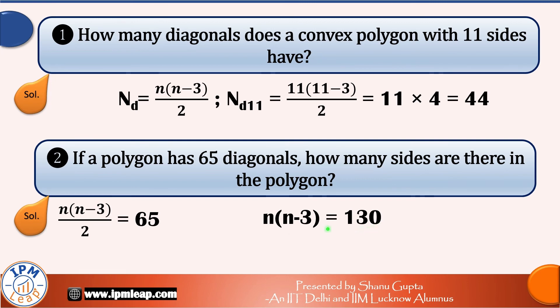It stands for the number of diagonals, right? So try writing the right hand side as a product of two factors of 130, which are close, and differ only by 3. Because left hand side, we can see that n and n-3 differ by 3, right?